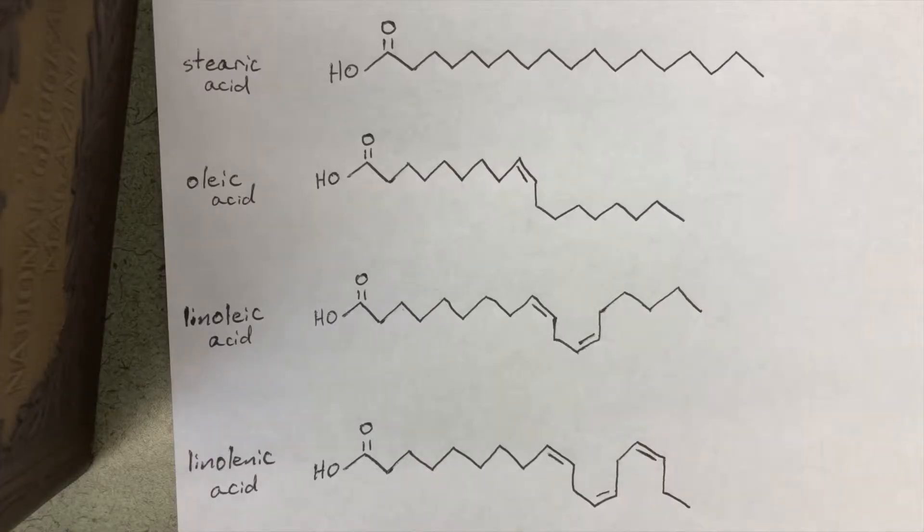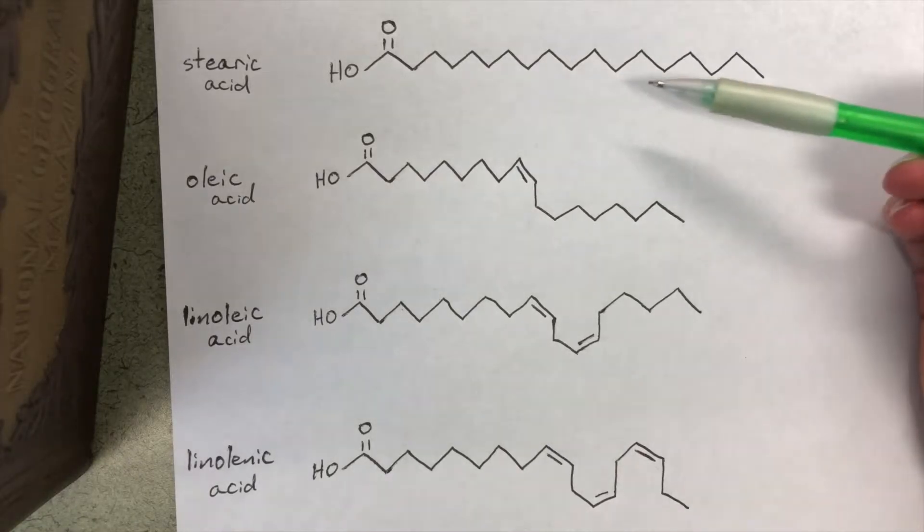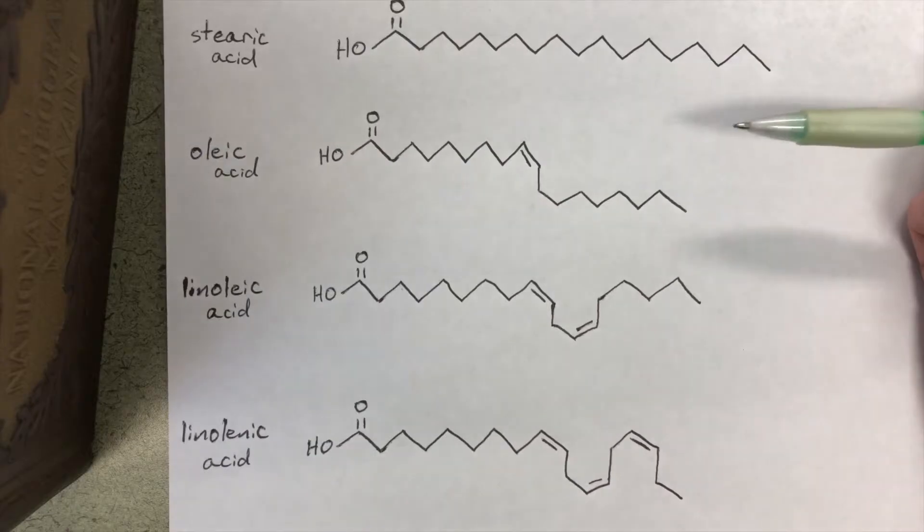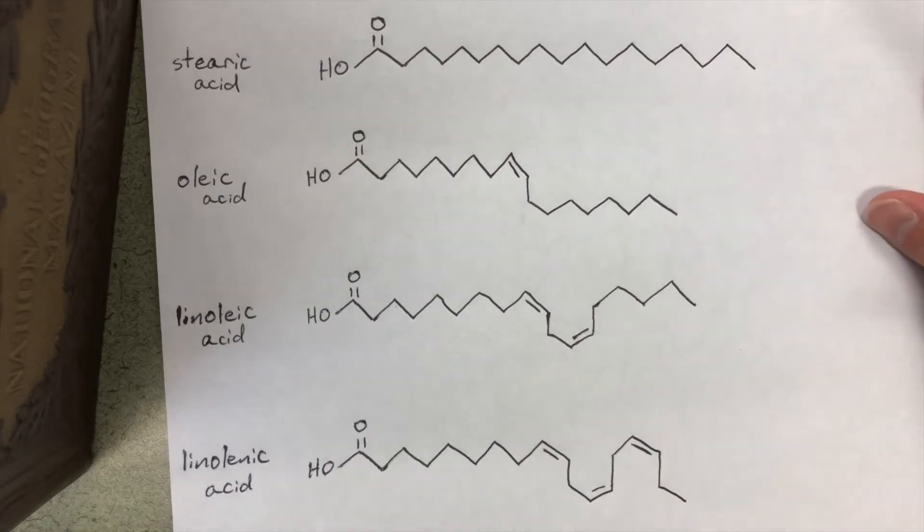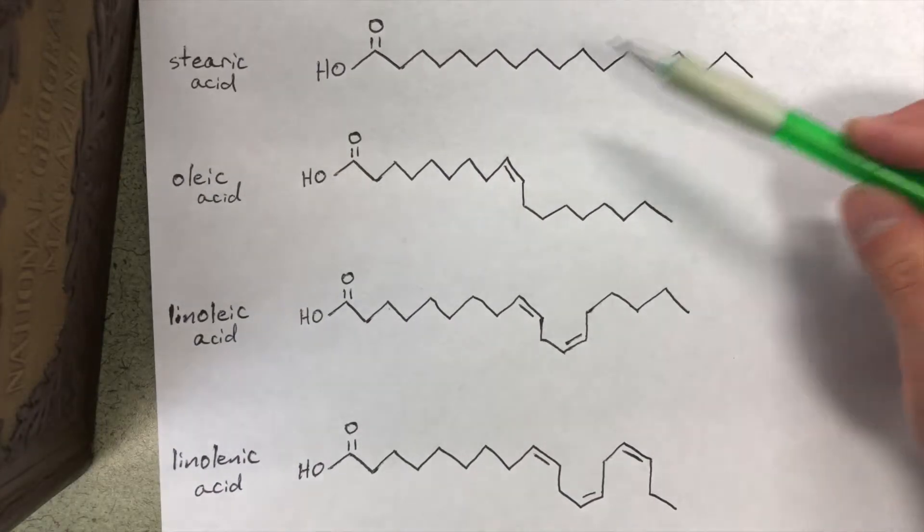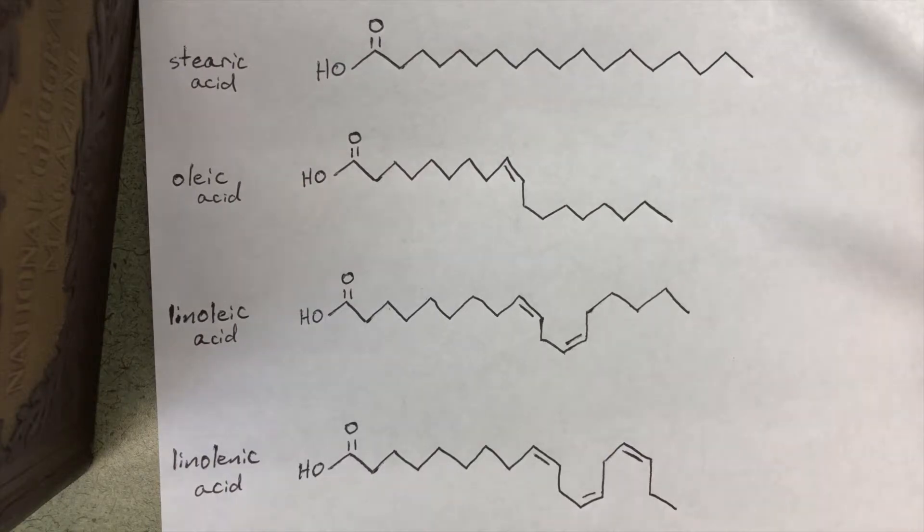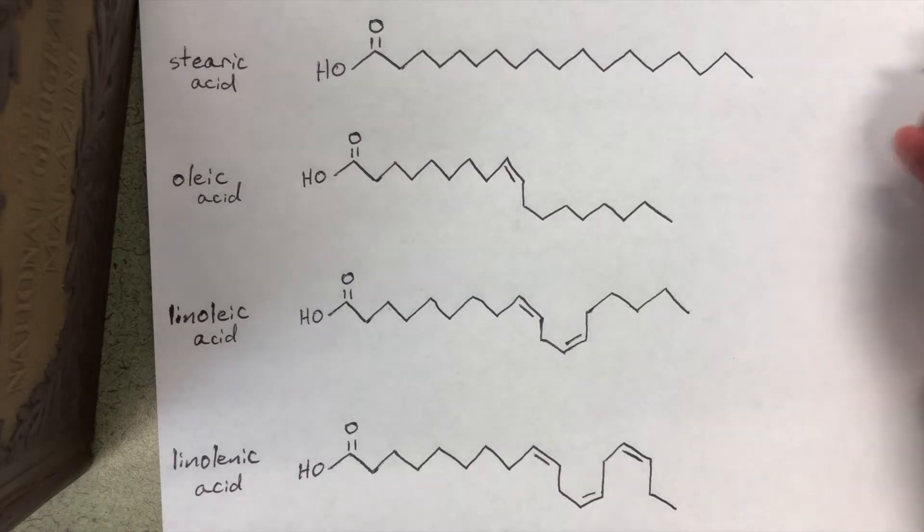If we look here at stearic acid, which as you can see is a saturated fat, there's no pi bonds, there's no rings, it's just a completely saturated hydrocarbon. Stearic acid is completely saturated and sure enough it has a melting point of 69 degrees Celsius.